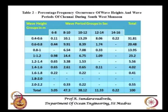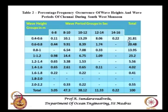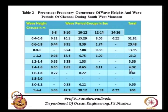We have three monsoon seasons: north east monsoon, south west monsoon, and a non-monsoon season. In south west monsoon, which lasts about 6 to 7 months, the wave height of 0.4 to 0.6 meters has a very high percentage of occurrence at 31 percent. Generally in south west monsoon, less than 1.6 meters accounts for nearly 99 percent of the waves. The wave period is between 8 to 10 seconds. Similar tables are prepared for north east and non-monsoon seasons.